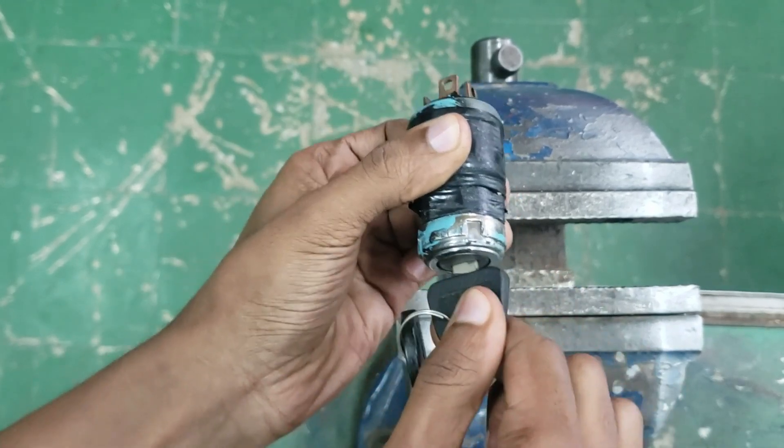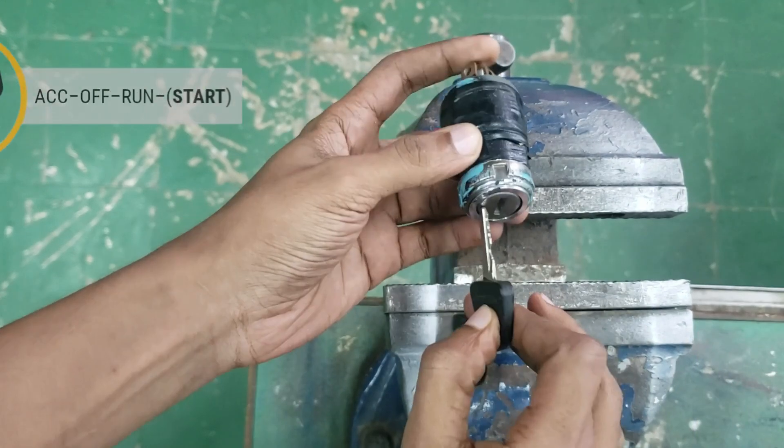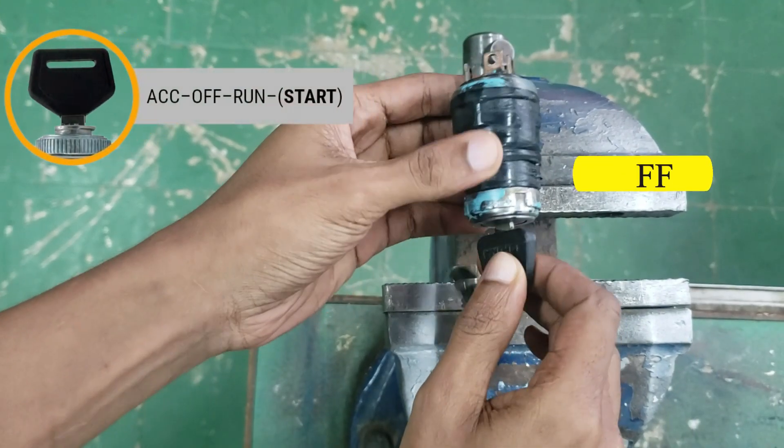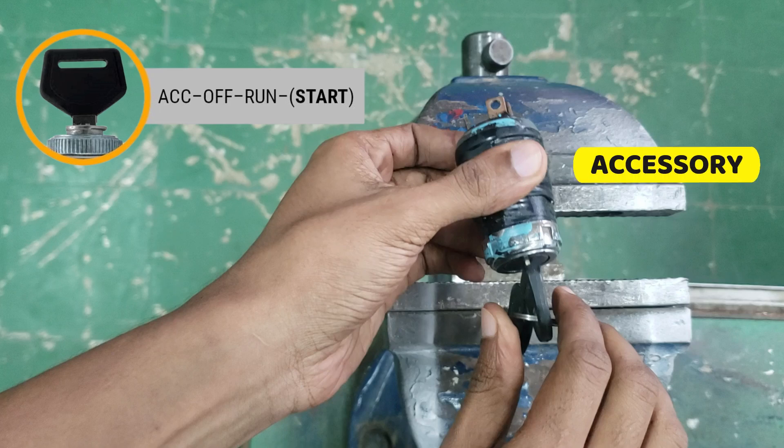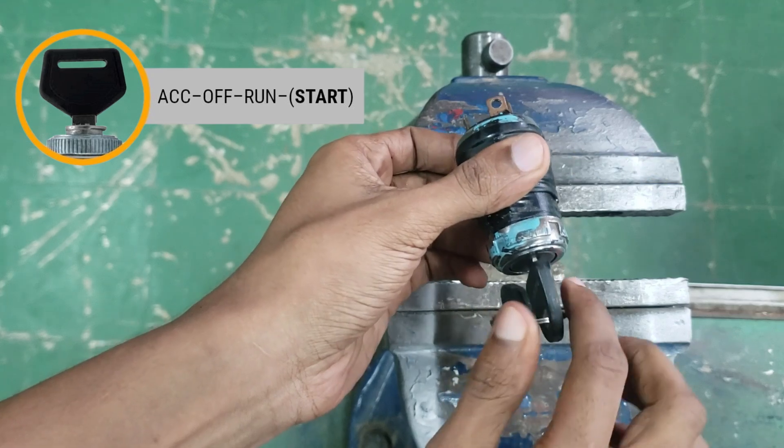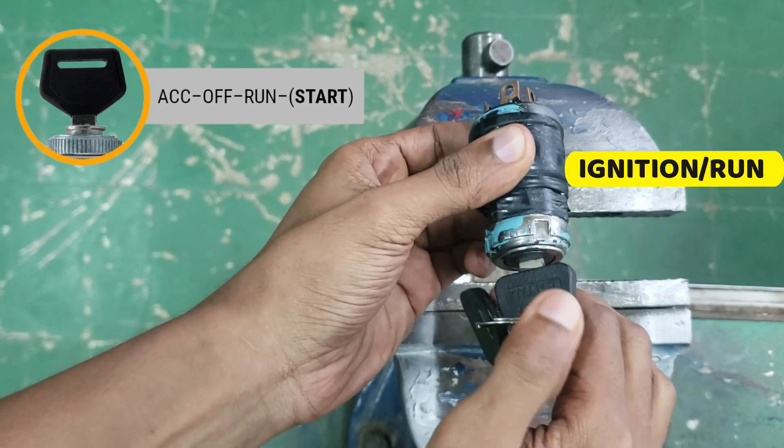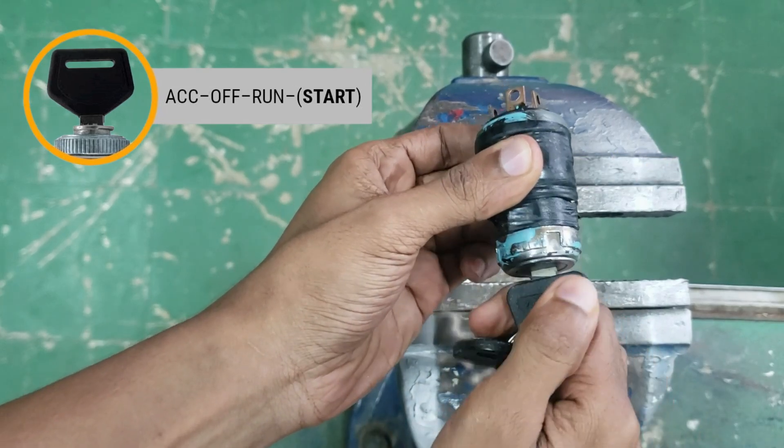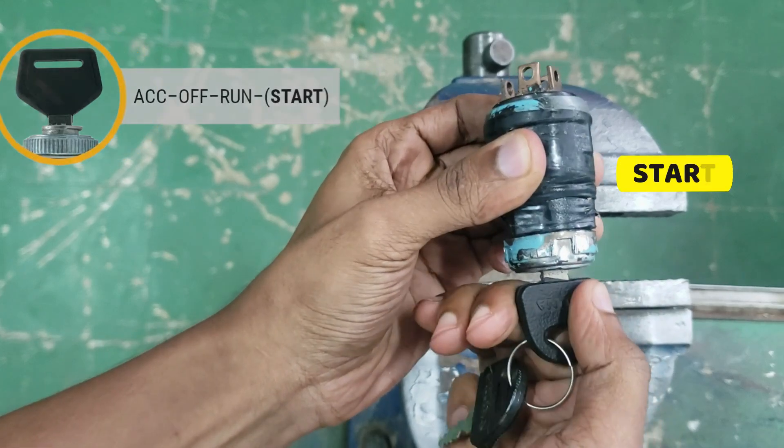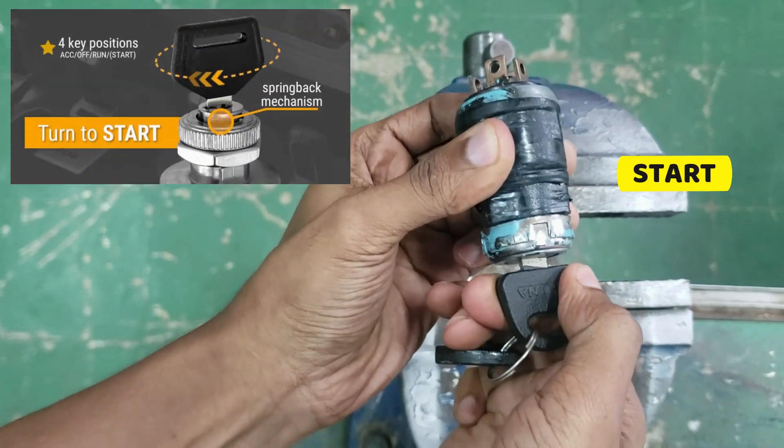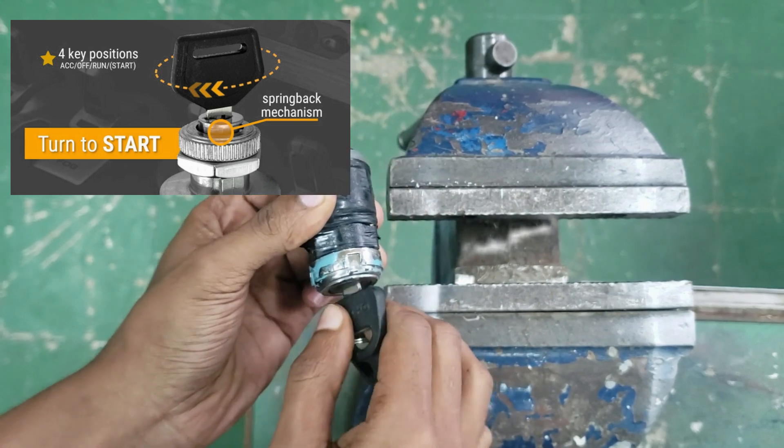The ignition switch features multiple positions, including Off Position, Accessory Position, Ignition or Run Position, and Start Position. Each position serves a distinct function in the operation of the vehicle.